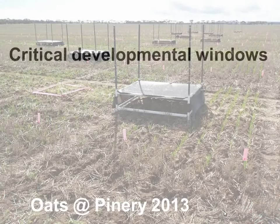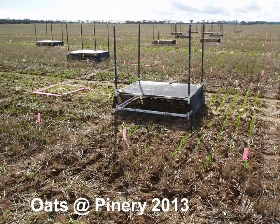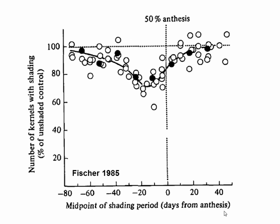That takes us to the idea of critical windows. We measure this experimentally using shading treatments applied for a couple of weeks at different crop stages, then measuring grain set at end of season. With that type of experiment, Tony Fisher determined the critical window for stress response in wheat. Early in the season or late in the season there's no response to stress. The critical window is approximately 40 days before flowering to 10 days after flowering — stem elongation to a week after flowering — that's the most critical window for stress response of wheat.